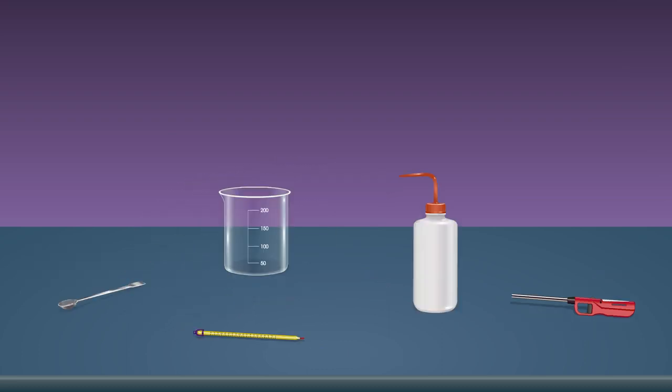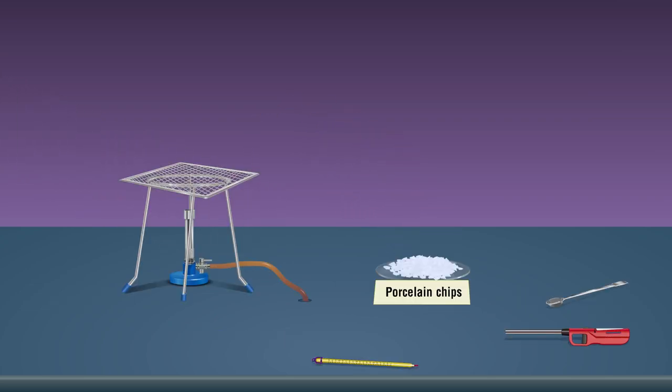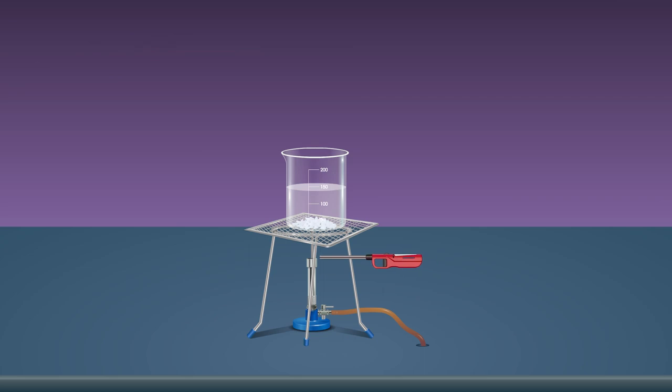on top of the tripod stand. Add 100 ml of water into the beaker using a wash bottle. Place the beaker on top of the wire gauze. Add a few pieces of porcelain chips into it. Turn the flame on using